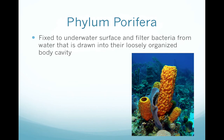Phylum Porifera is actually the simplest form of animal, and there is some debate over whether these should be considered animals or plants because they don't move around. All creatures in this phylum are fixed to an underwater surface and filter bacteria from the water drawn through their very loosely organized body cavity. These would be the sponges.